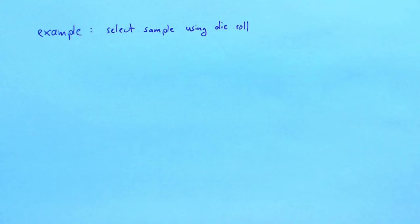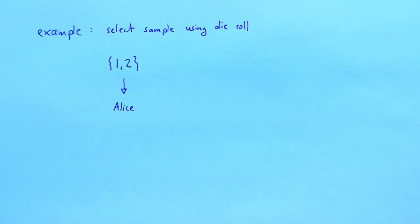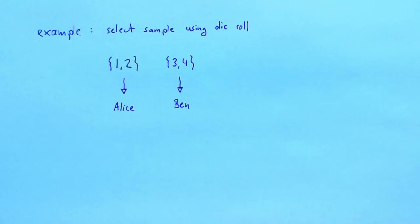To get a better intuition of the probability function, let's consider an example. Suppose that we select the sample by rolling a die. We use a regular die with six faces. If we roll one or two, we will select Alice. If we roll three or four, we will select Ben. And if we roll five or six, we will select Carl. To select a sample of size two, we go through this process two times.